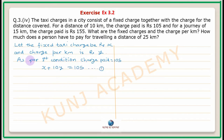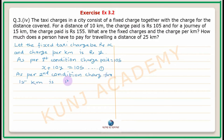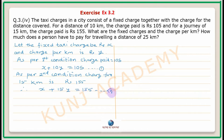As per the second condition, the charge for 15 kilometers is Rs.155. Therefore, x plus 15y equals 155. From equation 1, x equals 105 minus 10y.